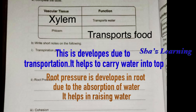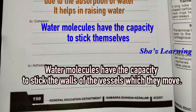Root pressure: root pressure develops in the root due to the absorption of water. It helps push water upward and keeps rising water moving through the xylem. Next, cohesion: water molecules have the capacity to stick to themselves. Water molecules are H2O — the molecules form bonds with each other. That is cohesion.